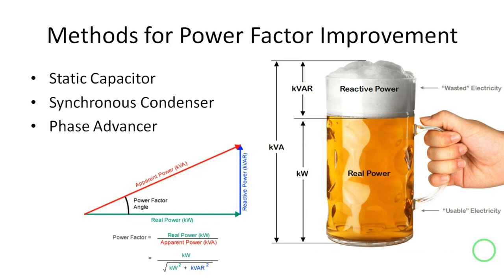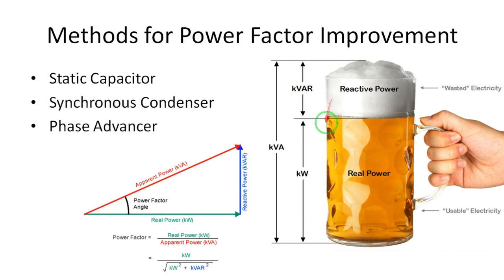Hello everyone. In this lecture we will discuss the methods to improve power factor. There are three methods. First, let me clarify what power factor is. We know that the power factor is the cosine of the angle between the voltage and current.